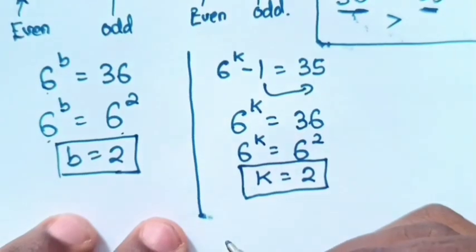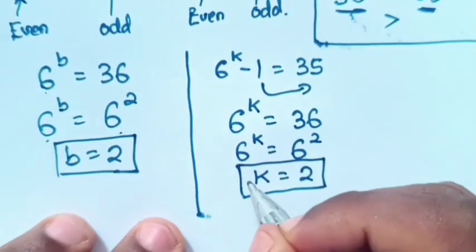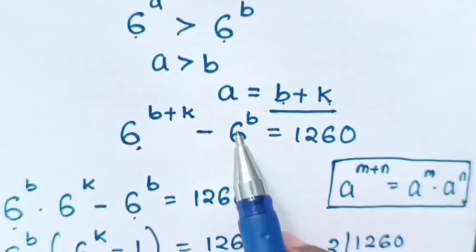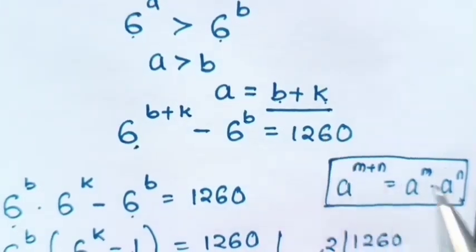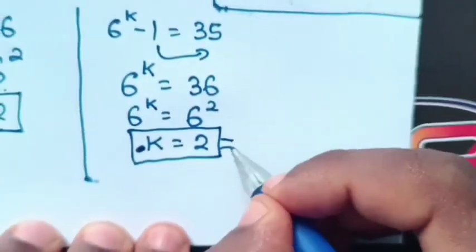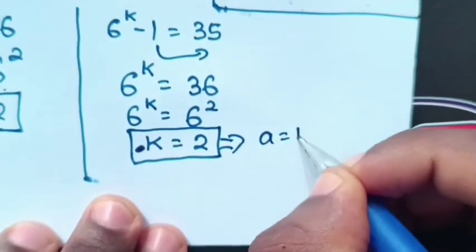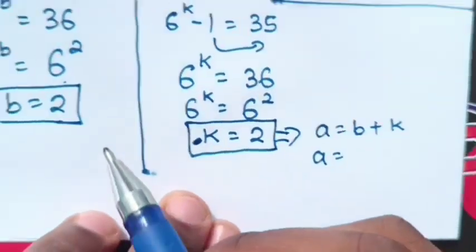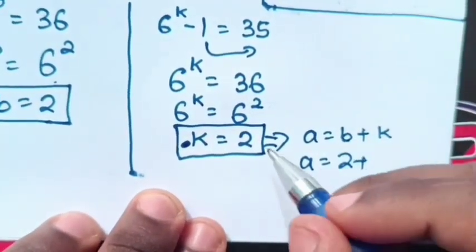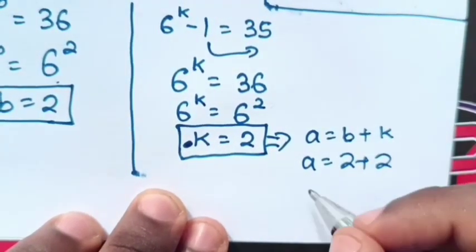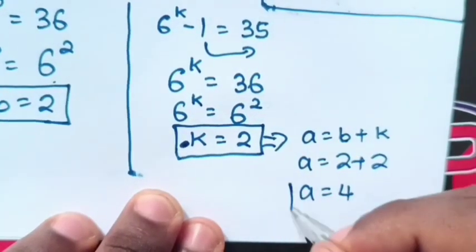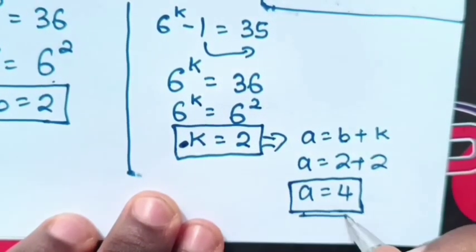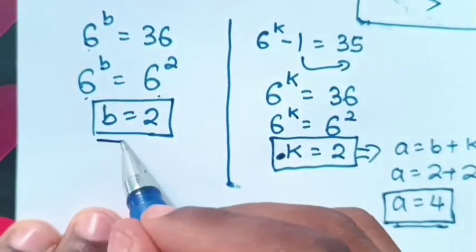So, if we got the value of k is equal to 2 from previously, we note that a is equal to b plus k. So, to find the value of a from a is equal to b plus k, a will be equal to b is 2, we substitute here 2 plus k is 2. We substitute here 2. So, a is equal to 4. So, we got the value of a is 4 and the value of b is 2.